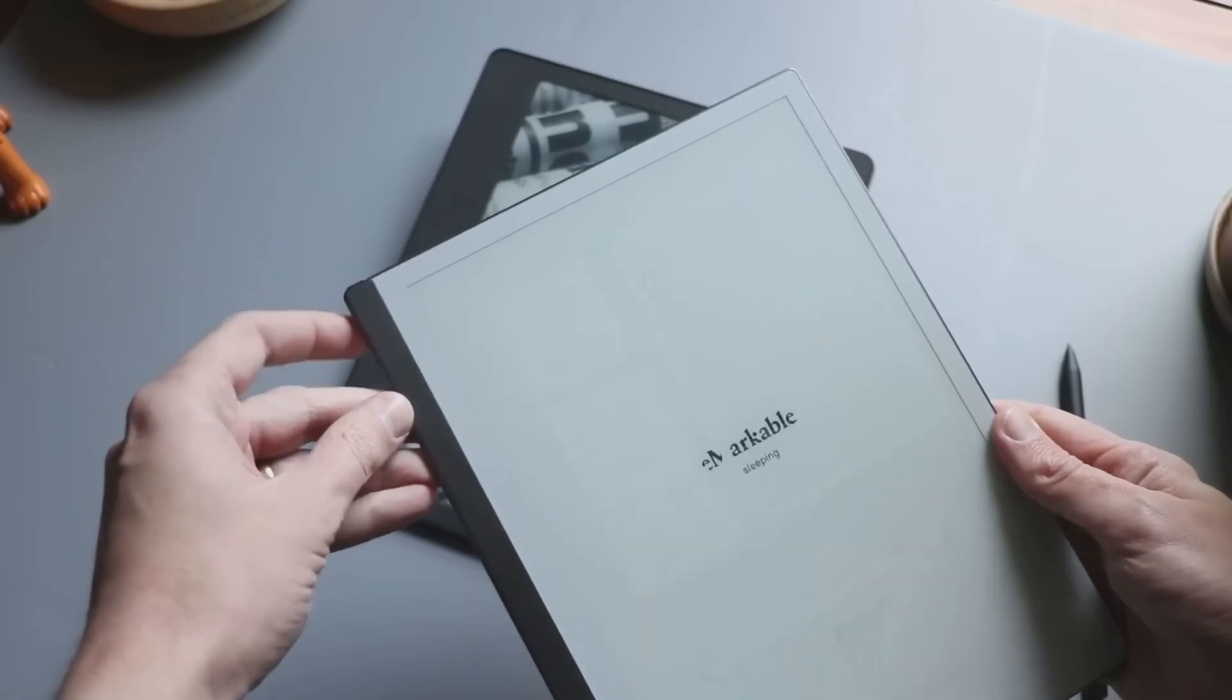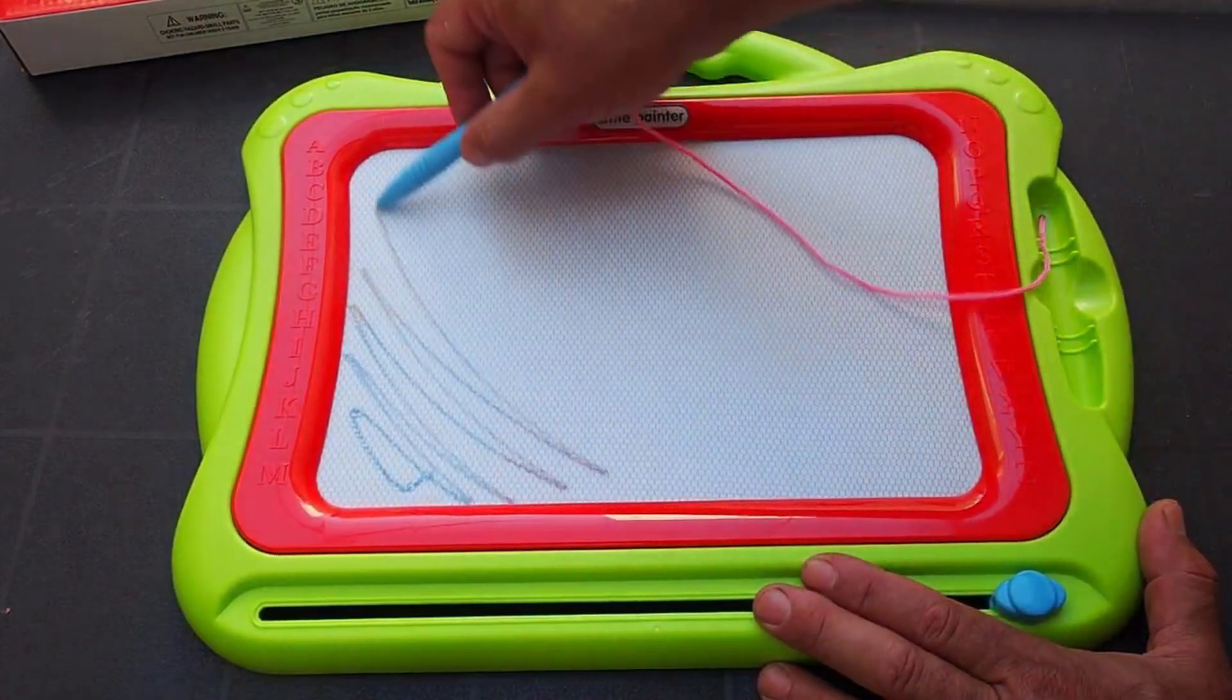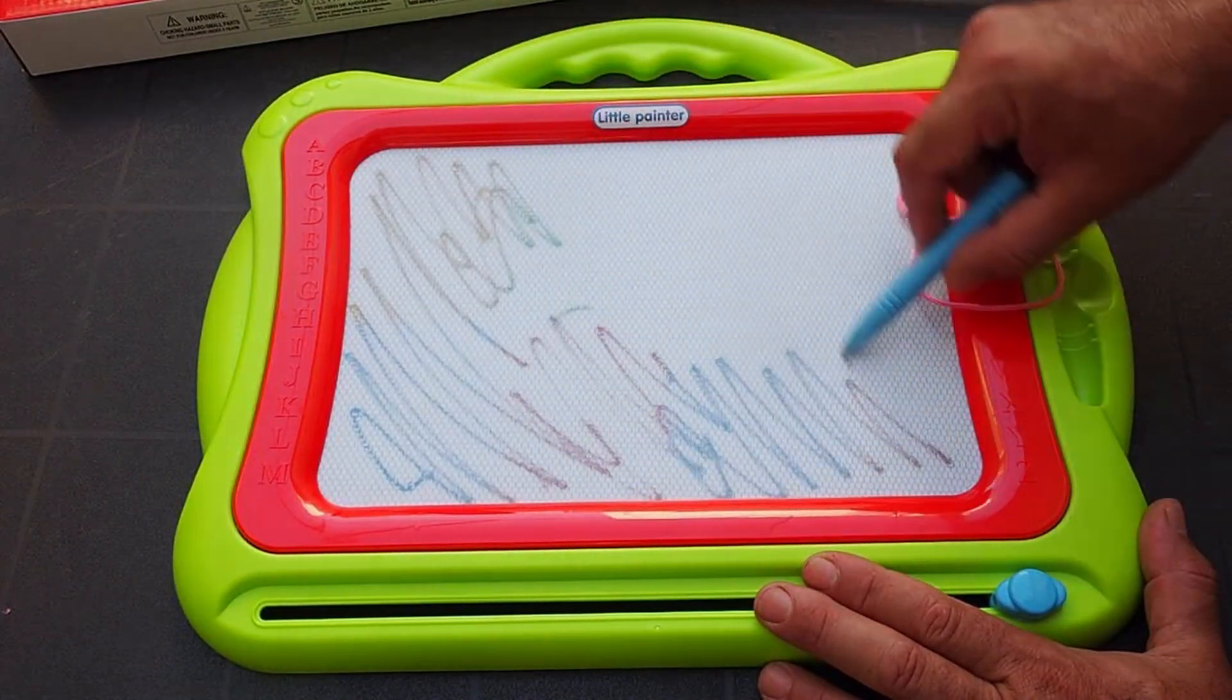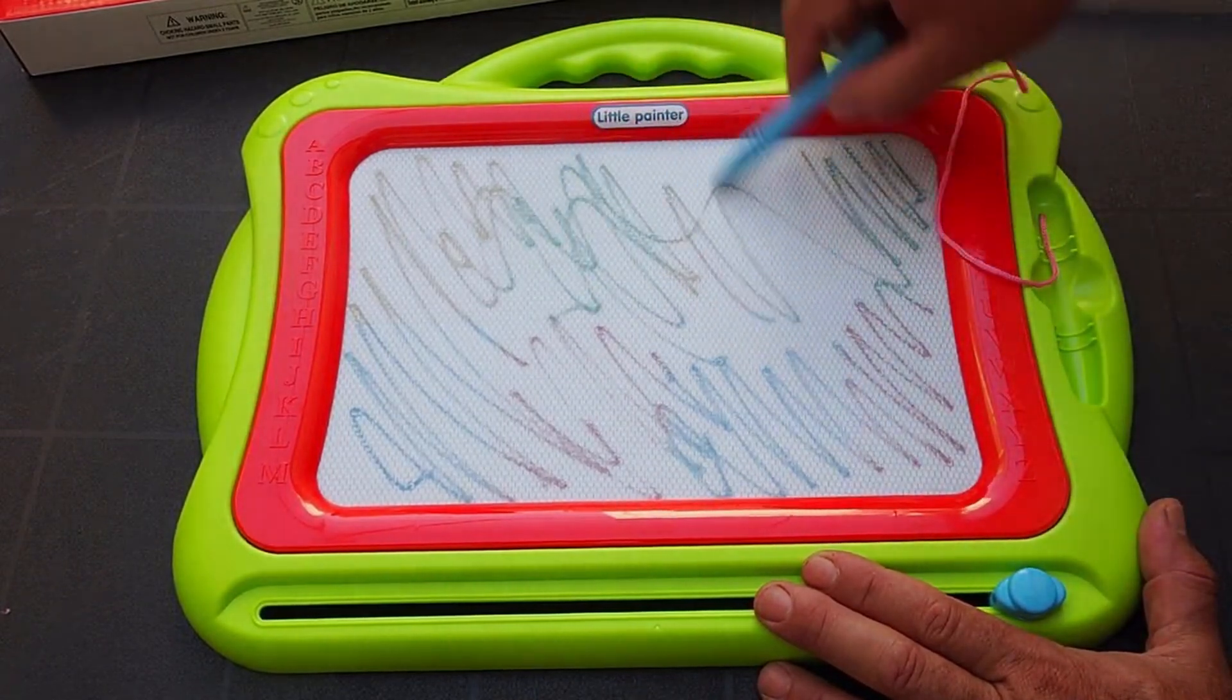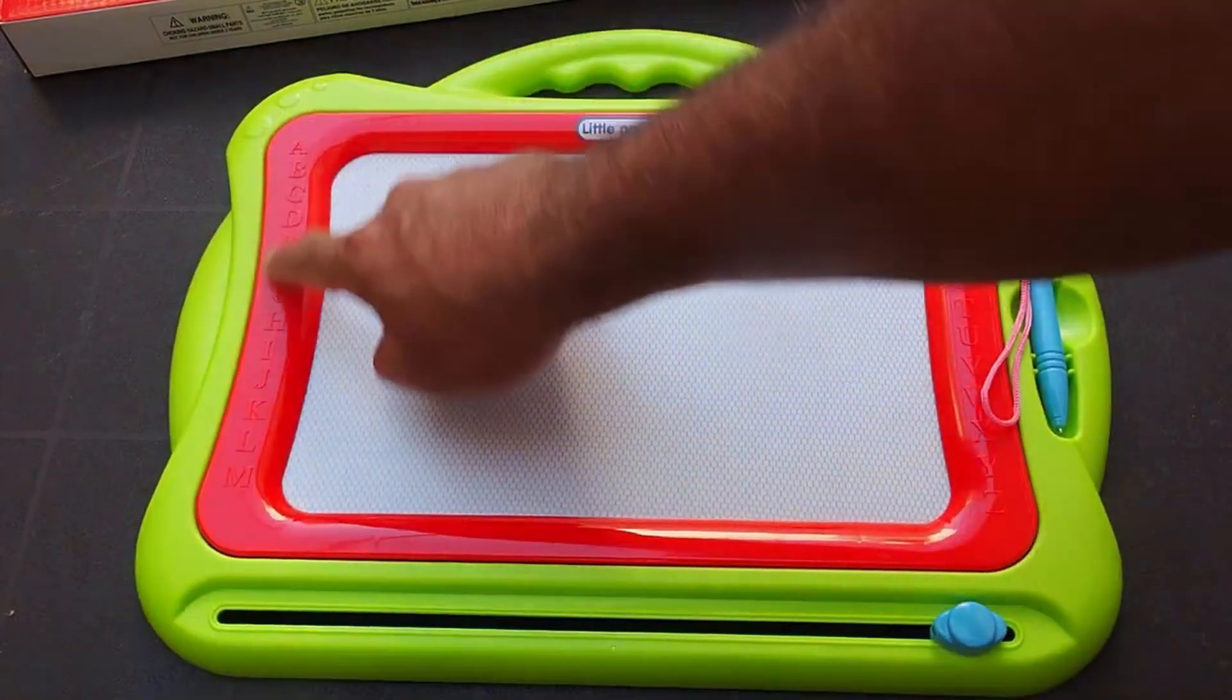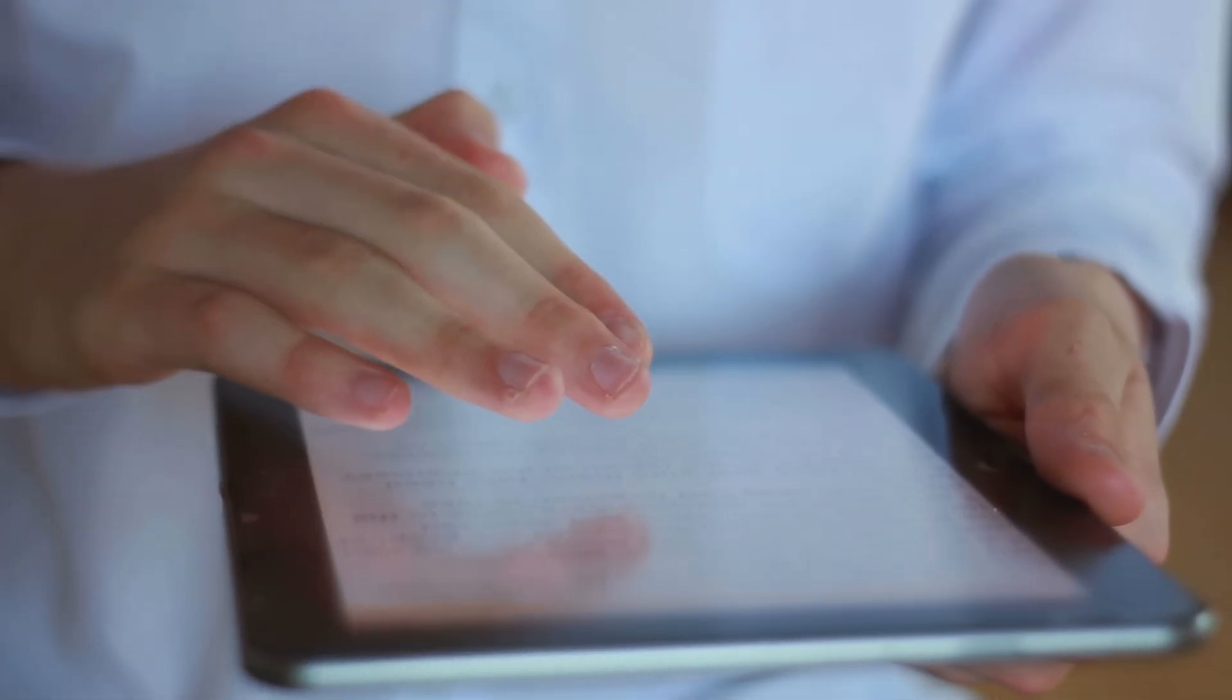E-ink screens are a marvel of engineering, yet their operation is surprisingly simple. But before we dive into how they work, let me show you something. Have you ever owned one of these magnetic drawing boards as a kid? You used a stylus with a magnet at the tip, and as you moved it over the board, it seemed to magically draw. If you wanted to erase it, you simply slid the plastic bar underneath and everything disappeared. As a child, this felt like magic to me. And in many ways, e-ink screens share a lot with this toy, but with a much more sophisticated mechanism.